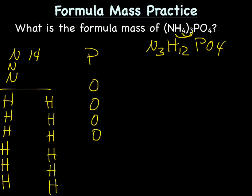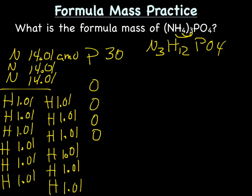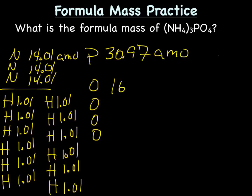So the mass for nitrogen is 14.01 amu. And of hydrogen, it is 1.01 amu. Phosphorus is 30.97 amu. And our oxygens are 16.00 amu.